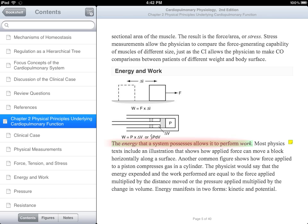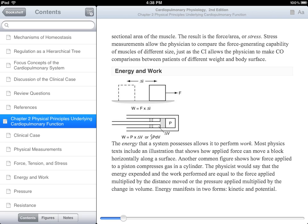To delete a highlight, tap anywhere on the highlighted passage. Then tap on the Delete button. Be aware that deleting a highlight will also delete any attached note.